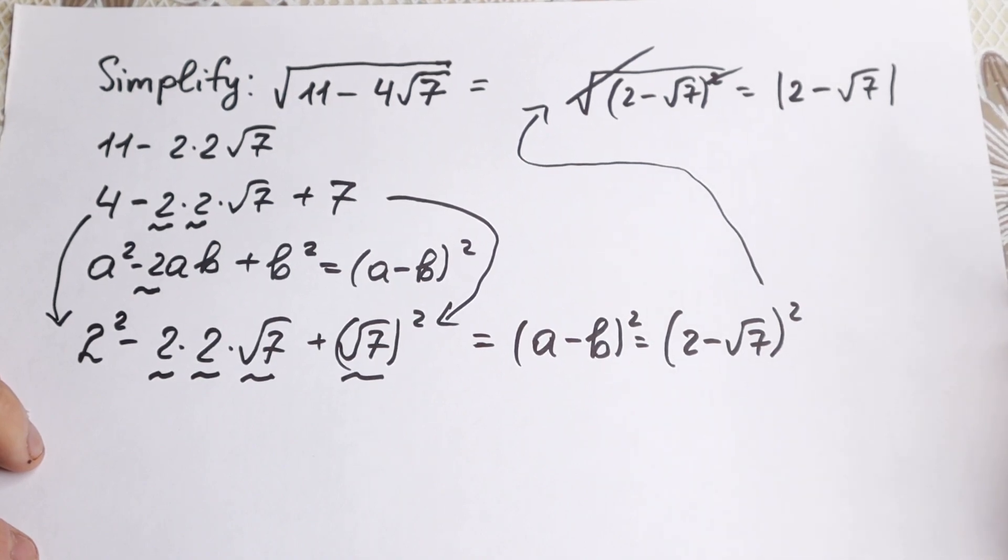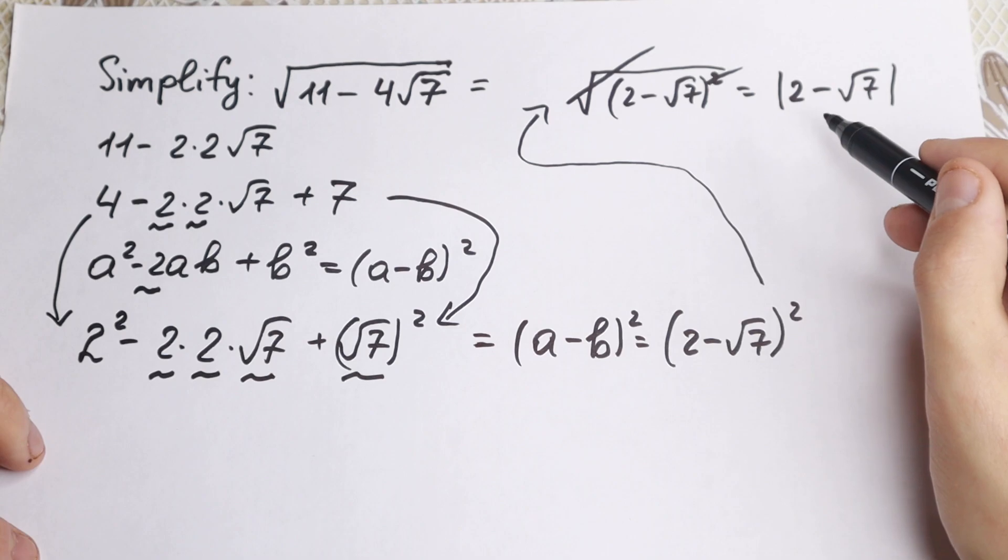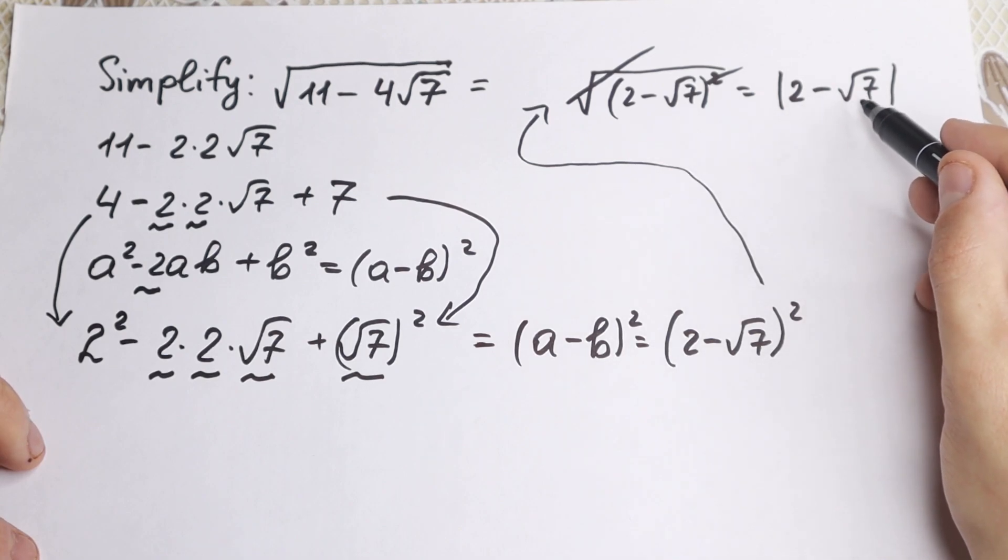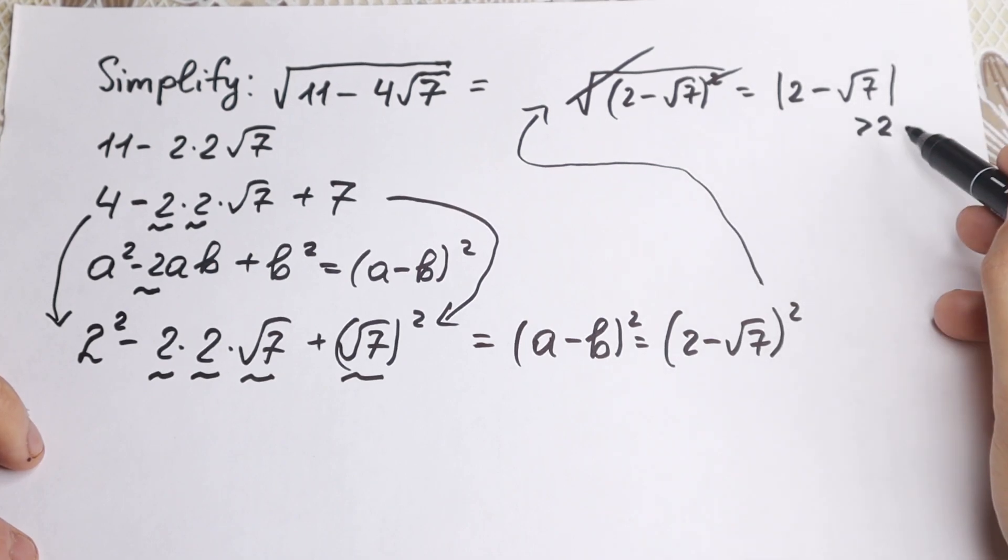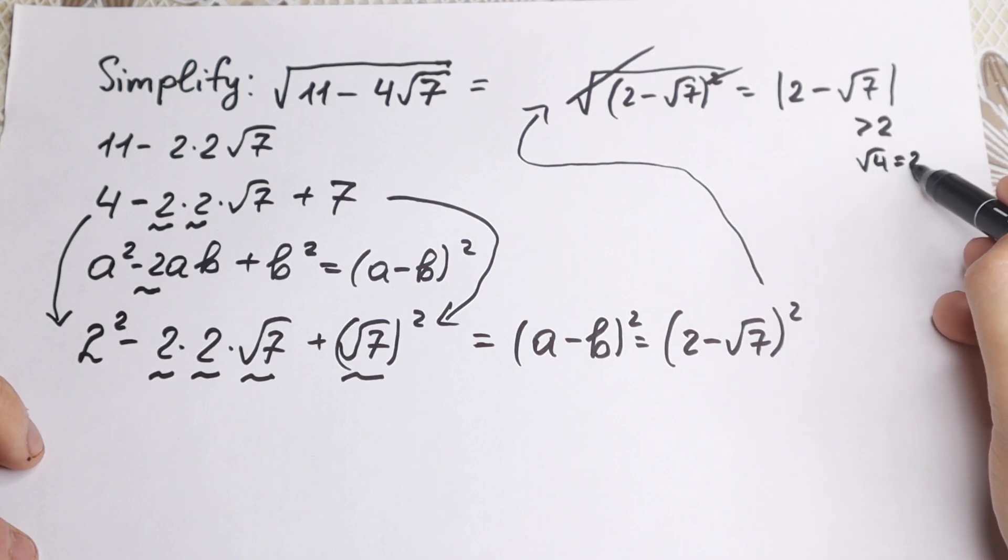Why do I write this absolute value? Because we need to find the sign of what's inside. At first glance this is positive, but if you look closely, square root of 7 is greater than 2, because square root of 4 equals 2. And here we have square root of 7, so this is greater than 2.